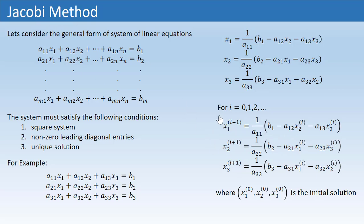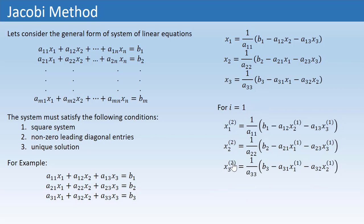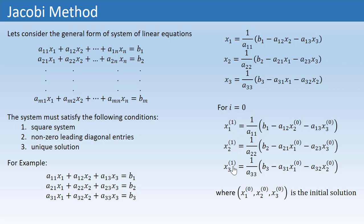For I=0, we get the solution expression for the first approximate solution. On the right-hand side, we can see that we require X1⁰, X2⁰, and X3⁰, which is basically the initial solution. So we can substitute the initial solution to find the first approximate solution.